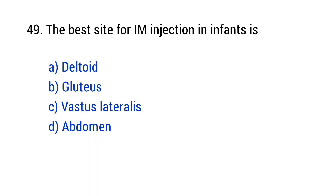Question number 49: The best site for IM injection in infants is? The right answer is option C — Vastus lateralis.